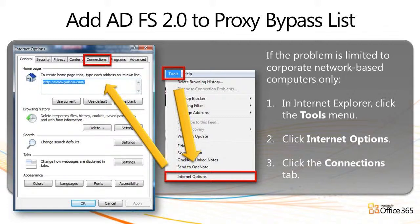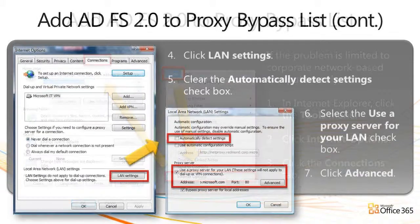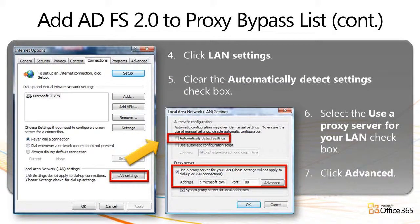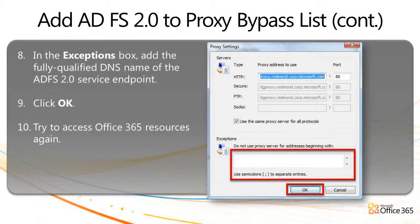On the computer which is experiencing problems, open the Internet Options window and then click the Connections tab. Click LAN Settings, and then clear the Automatically Detect Settings checkbox. Select the Use Proxy Server for your LAN checkbox, and then click Advanced. In the Exceptions box, check whether the fully qualified DNS name of the ADFS 2.0 service endpoint, such as sts.company.com or fed.company.com, is listed.